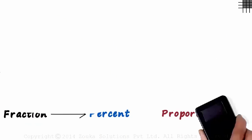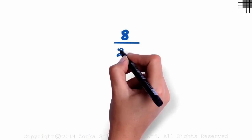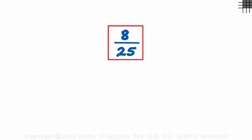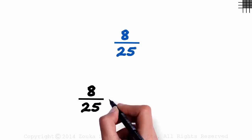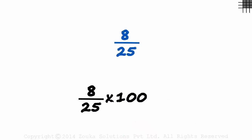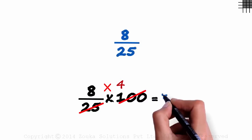Let's erase this and look at a couple of examples. 8 by 25. To convert it into percent terms, we multiply 8 by 25 with 100. 25 times 4 is 100, and 8 times 4 is 32. 8 by 25 is 32 percent.